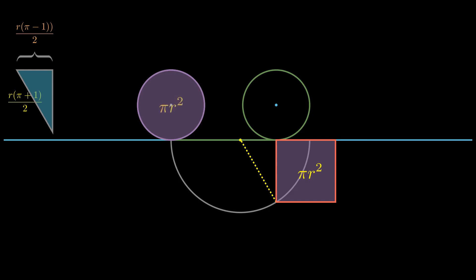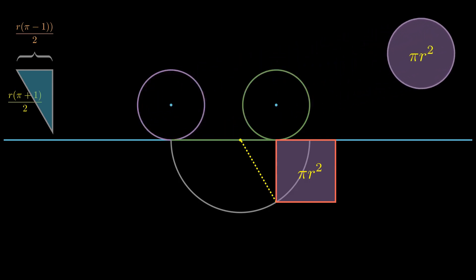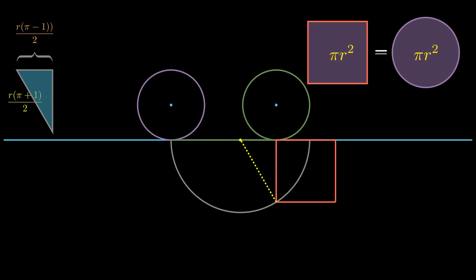The circle that we started with had an area of pi r squared as well, which means that we delightfully squared the circle.